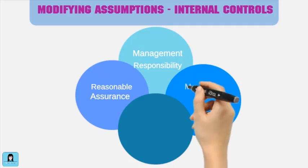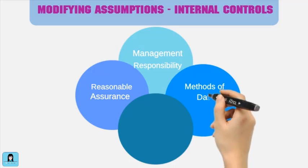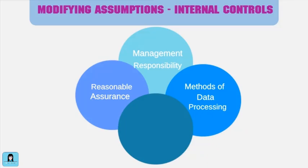The third assumption is that internal controls should achieve the four broad objectives regardless of the data processing method used. The control techniques used to achieve these objectives will, however, vary with different types of technology. And the fourth assumption: every system of internal control has limitations on its effectiveness. This includes the possibility of error, circumvention or collusion, management override of controls, and changing conditions making existing controls become ineffectual or not effective anymore over time.